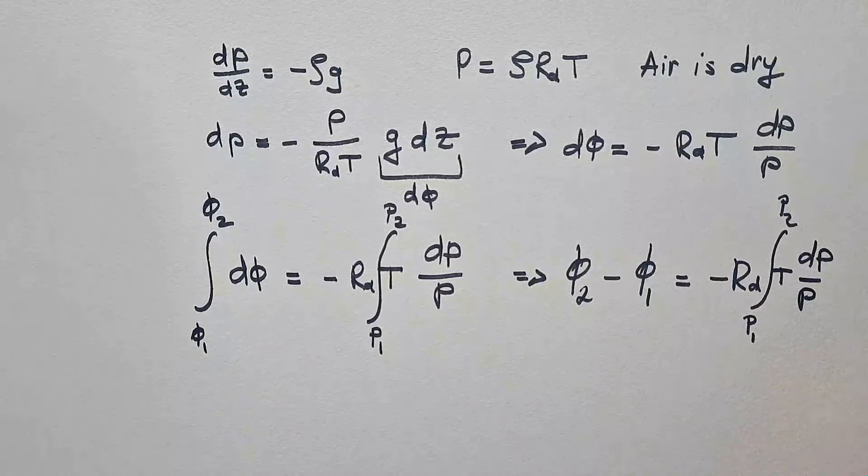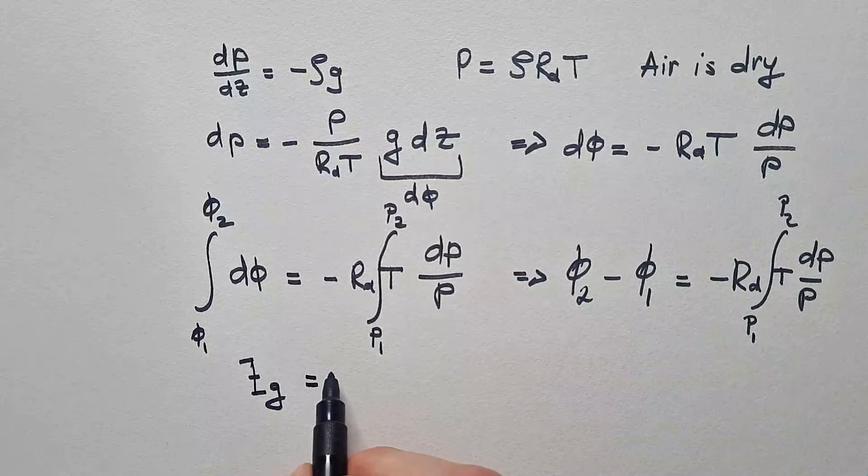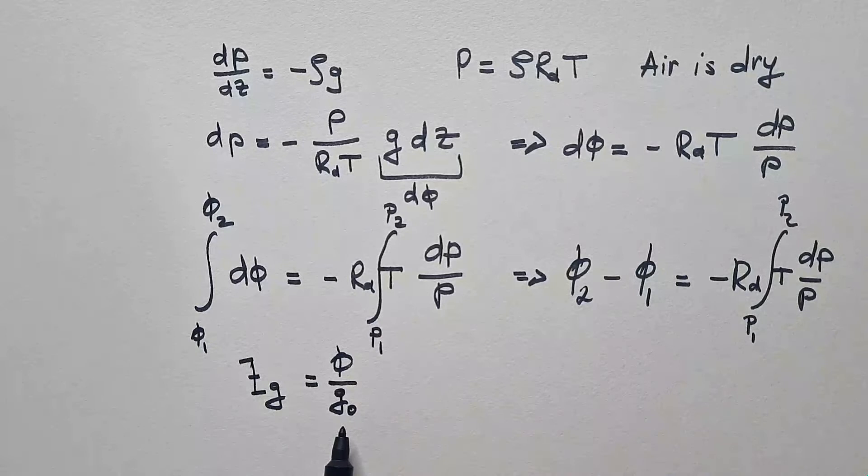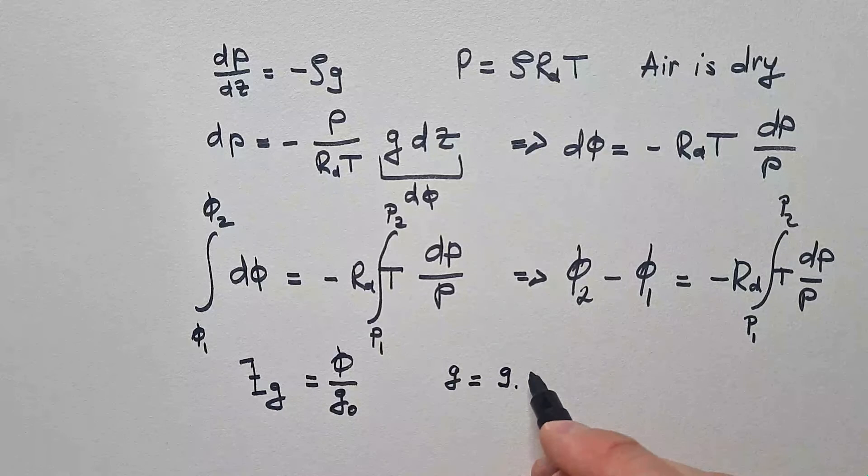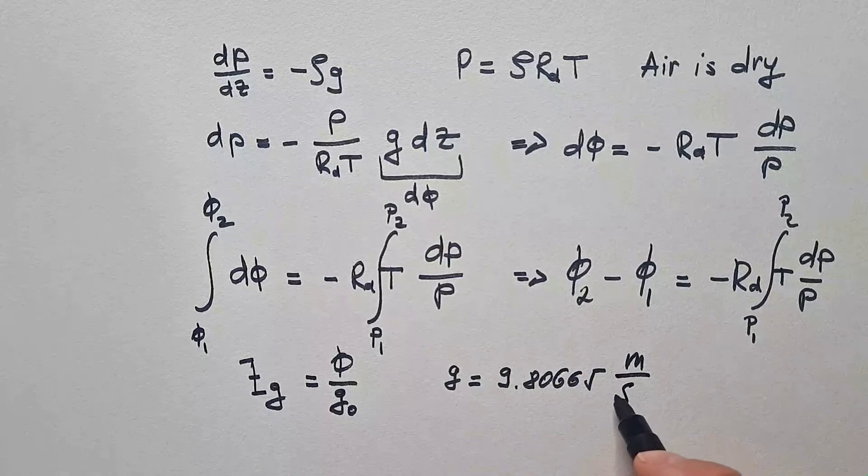Now, we know that geopotential height Zg is defined as geopotential over g0, and g0 is the standard gravity. I told you in one of the previous videos it is 9.80665 meters per second squared.